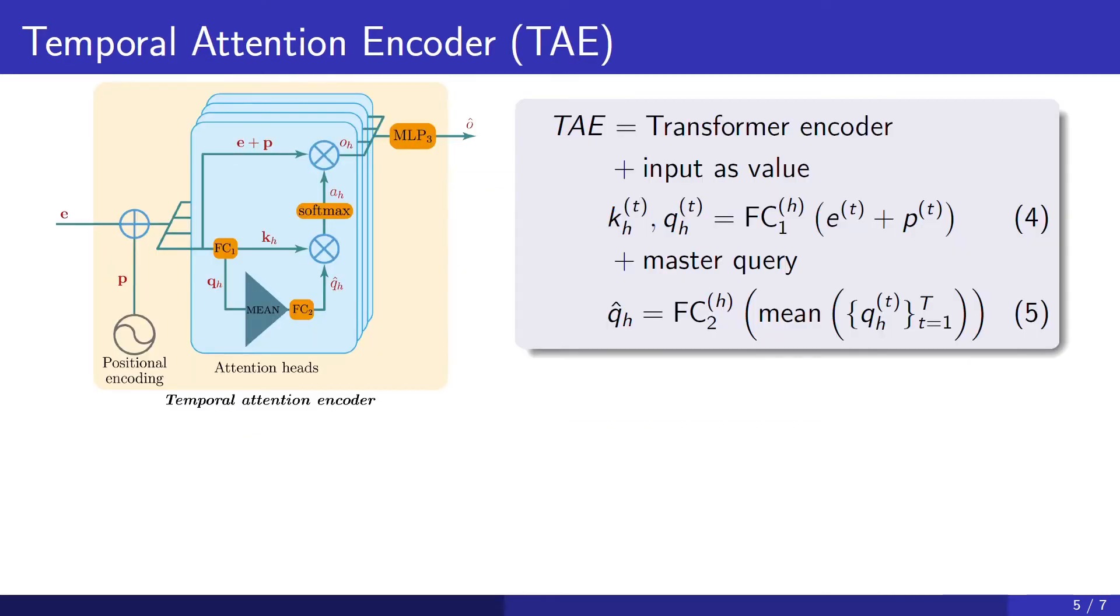On the temporal front, we adapt the self-attention mechanism to our task. So starting from a transformer encoder, we implement two slight modifications. First, we directly bypass the inputs as values. In the common NLP context, the input embeddings are pre-computed word embeddings, such as word2vec vectors, whereas in our case, the image embedding network is trained end-to-end with a self-attention mechanism, so that's why we can directly bypass the input embeddings as values.